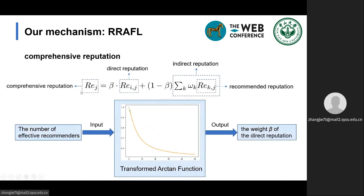The calculation methods of direct reputation and indirect reputation have been introduced above. The greater the number of effective recommenders, the more valuable indirect reputation is. Therefore, the weight of the direct reputation should decrease as the number of effective recommenders increases, but has a lower bound. The number of effective recommenders is the input of a transformed ARCTAN function and the output is the weight of direct reputation. By taking a weighted average of direct and indirect reputation, the comprehensive reputation is obtained.